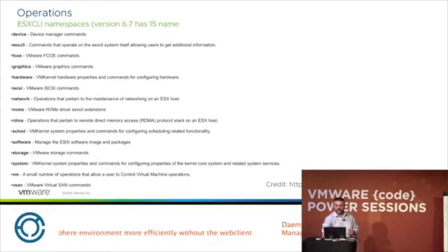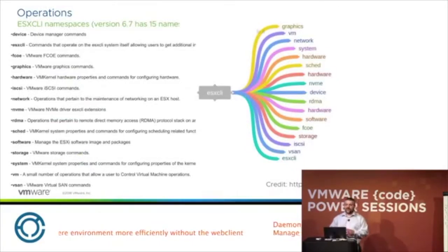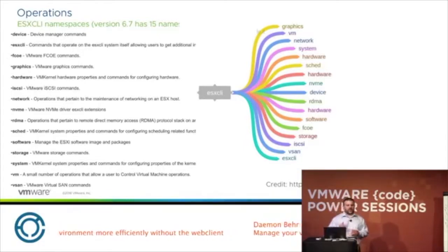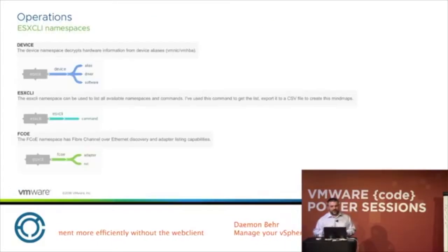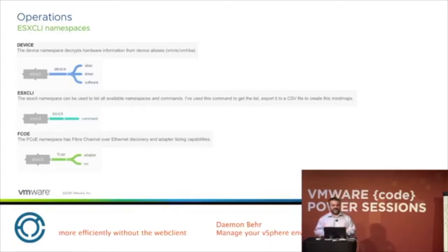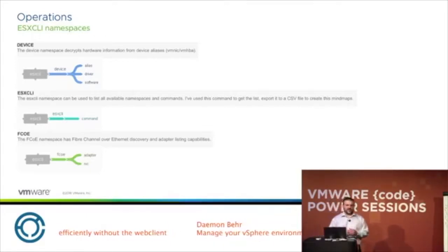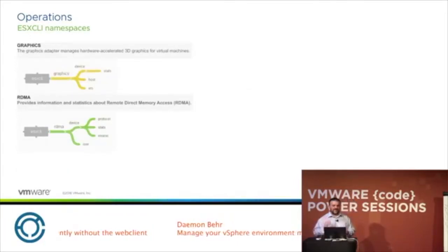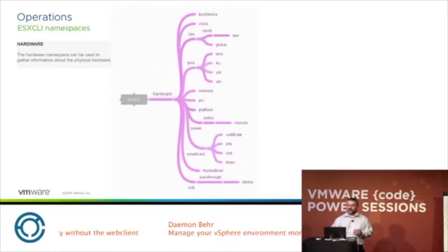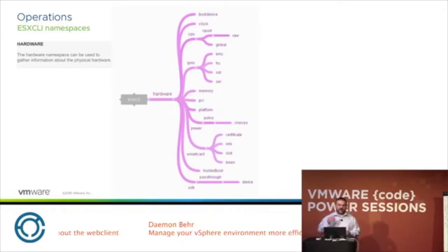As of vSphere 6.7 there are 15 namespaces available in ESXCLI, and I'm going to go through each one to show you the vast depth of functions. With the device namespace you're able to look at hardware information associated with vmnics and vmhbas. The ESXCLI itself will provide information on all available namespaces — that's essentially your help. You have an FCOE namespace to manage Fibre Channel adapters, a graphics namespace, an RDMA namespace, and a hardware namespace with a lot of different trees you can access to get a lot of detailed information.